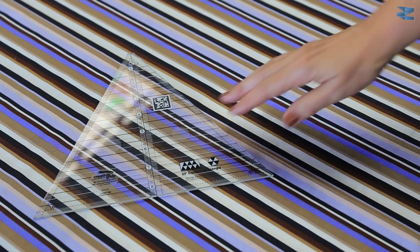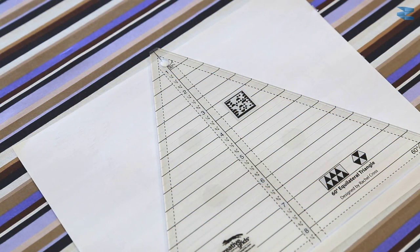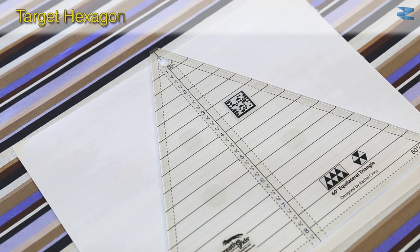I am using this asymmetrical striped fabric for demonstration. The tool for cutting diamonds and triangles is Creative Grids 60 degree equilateral triangle. To calculate the length of the fabric required for the hexagon, measure the baseline of the triangle on the ruler. Then multiply that number by seven.